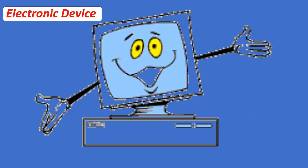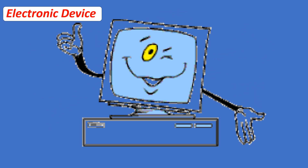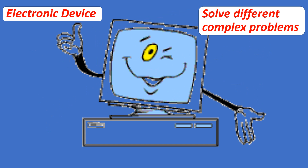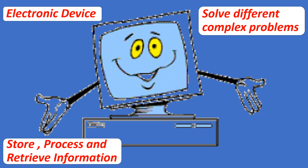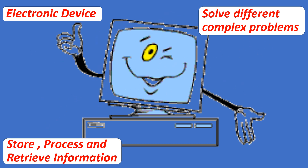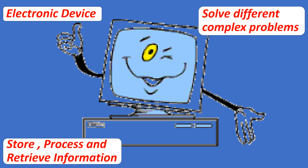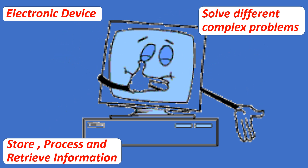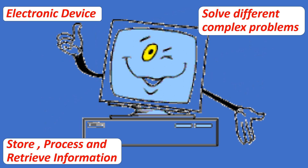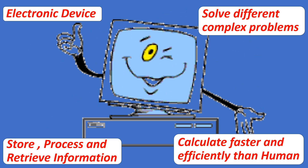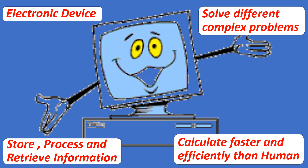A computer is an electronic device. It can solve different complex problems. It can store data, process and retrieve information. Human created computer, but computer can perform calculations faster and more efficiently than humans.